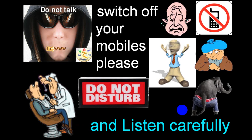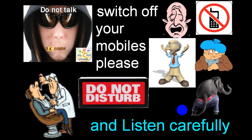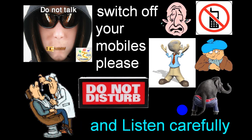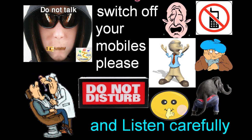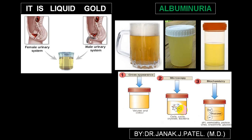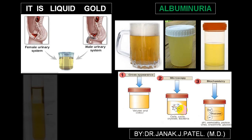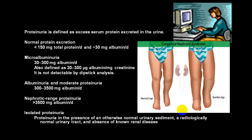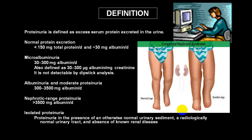We are starting with the second topic: proteinuria, also called albuminuria. Urine examination is very important and is considered a liquid gold. Proteinuria means excess of serum protein excreted in urine, and it is one of the most important tests which gives you a lot of information regarding kidney disorders.